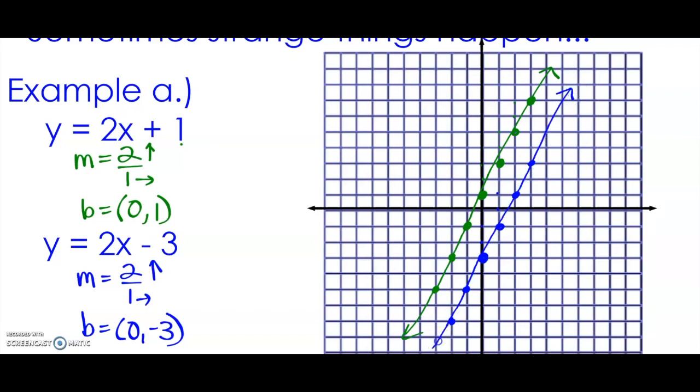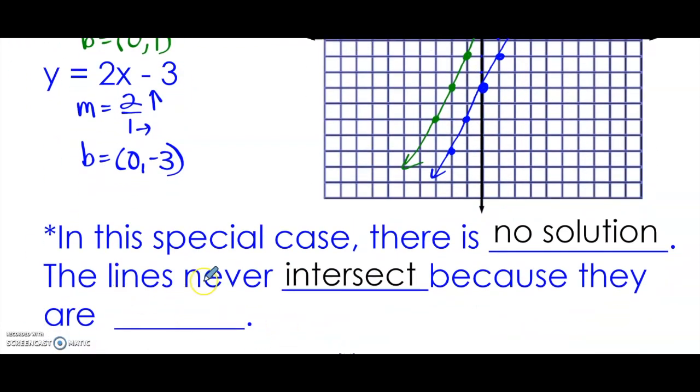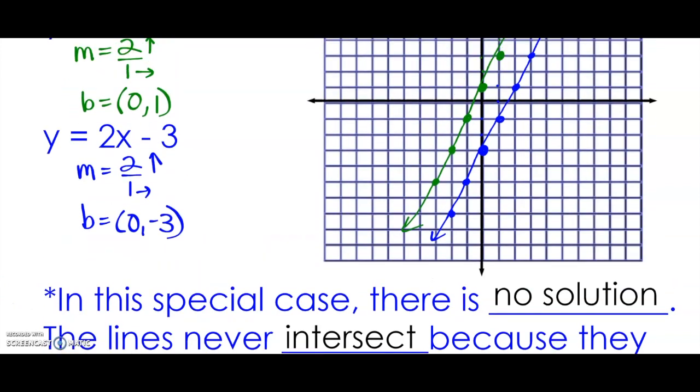With these lines—these lines are parallel, they do not intersect. So if the solution to a system of equations is the point where the two lines intersect, and these lines do not intersect, that tells us there is no solution. The lines never intersect because they are parallel lines.